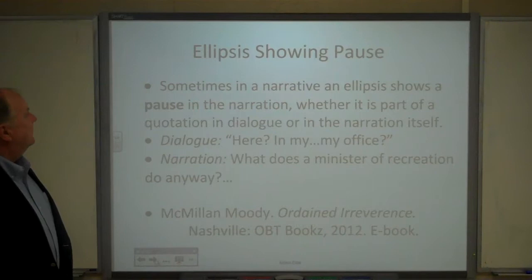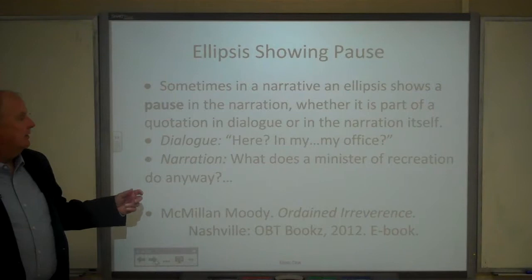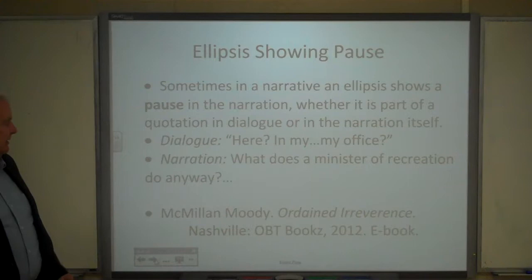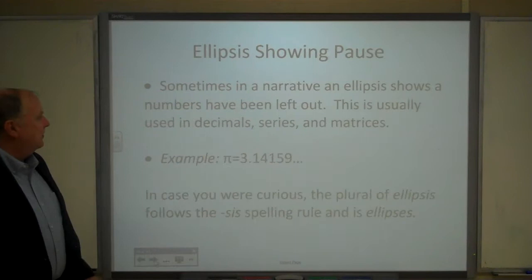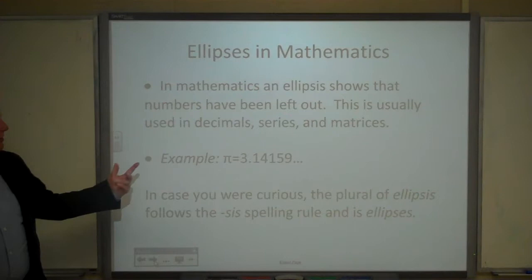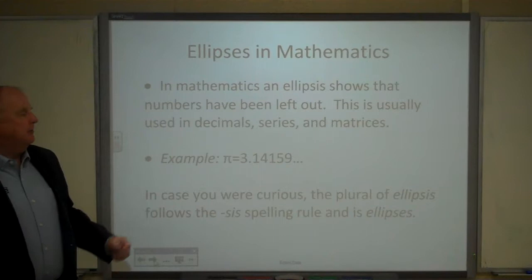Sometimes in a narrative, an ellipsis shows a pause — like 'Here? In my office?' or 'What does a minister of recreation do anyway?' You sometimes see that used in narrative, whether it's in dialogue or in telling the story. Some authorities use a fourth period if a paragraph or more has been left out. In mathematics, we use the ellipsis to show there are numbers left out — for example, pi equals 3.14159... The plural of ellipsis is ellipses, following the S-I-S spelling rule.